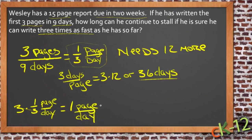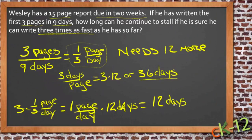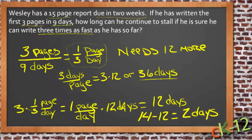He needs 12 more pages, so one page per day times 12 days would be 12 more days. If he has two weeks left — that's 14 days — then we have 14 minus 12, or two days that he can still mess around and not get to work, assuming he really can work three times as fast as he has been.